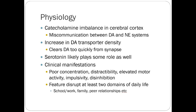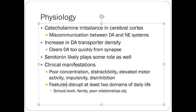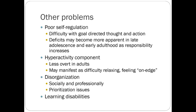Clinical manifestations include poor concentration, distractibility, elevated motor activity, impulsivity, and disinhibition. Features must disrupt at least two domains of daily life — school, work, family, and peer relationships. Other problems include poor self-regulation and difficulty with goal-directed thought or action. The hyperactivity component is less overt in adults.